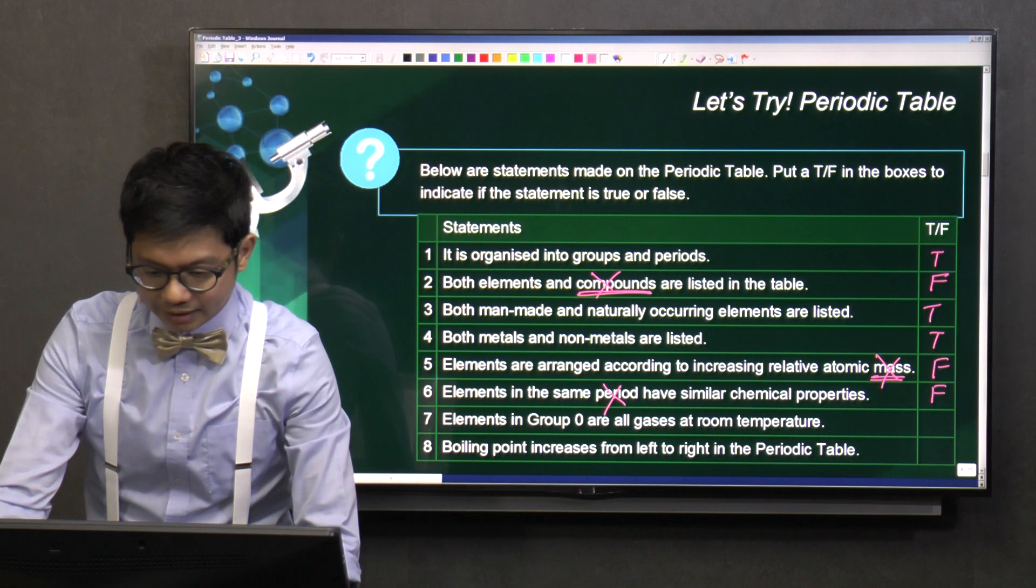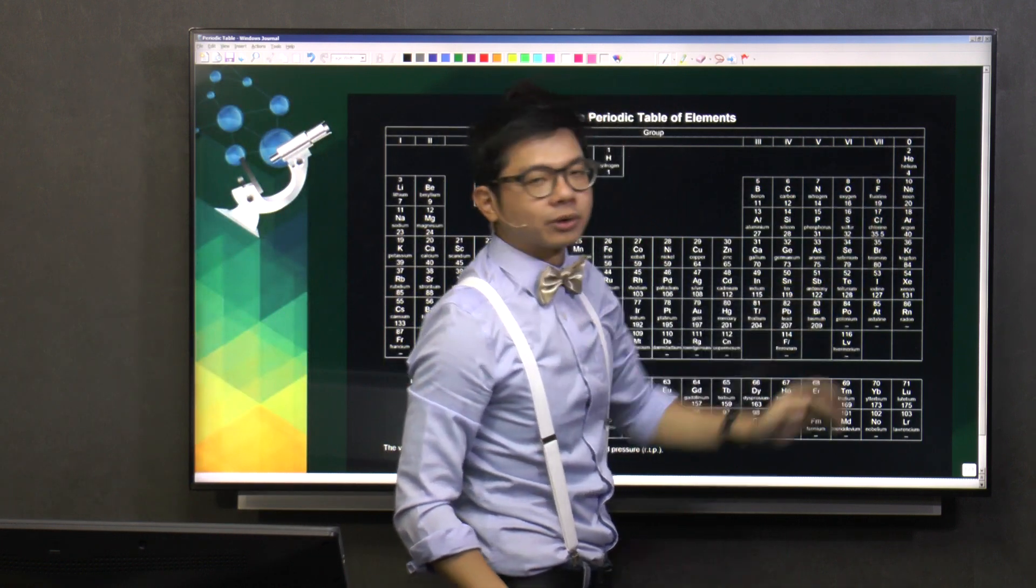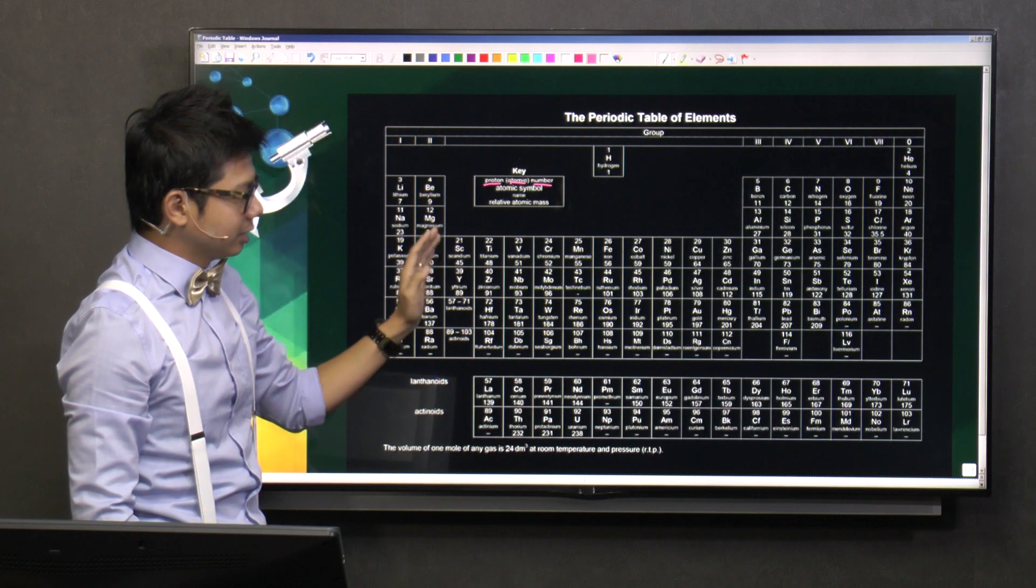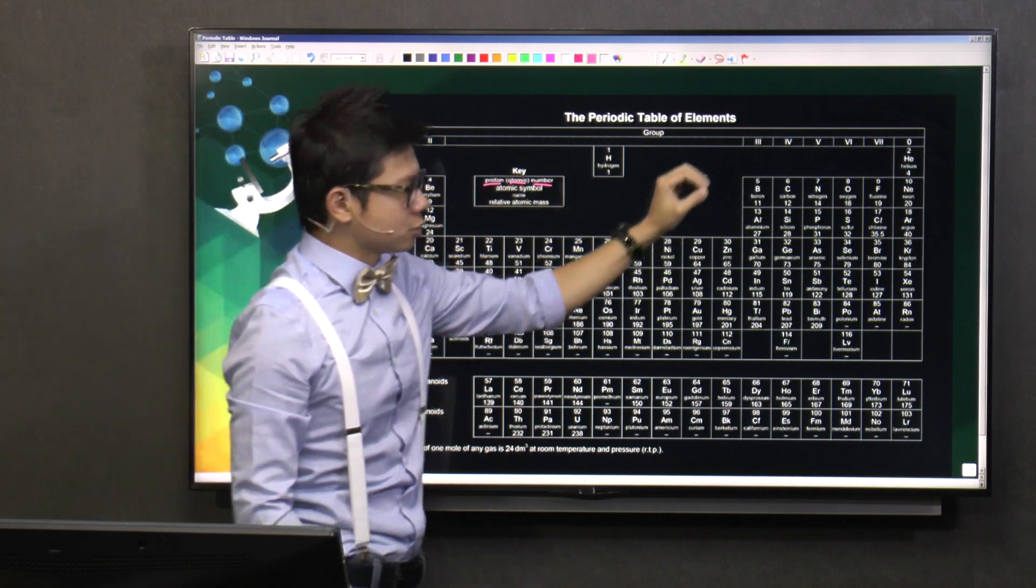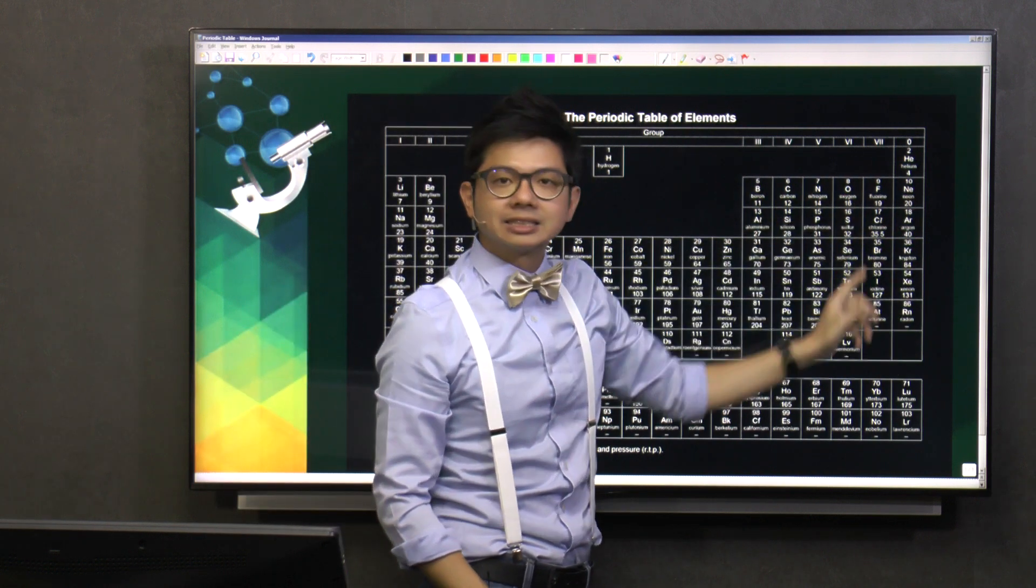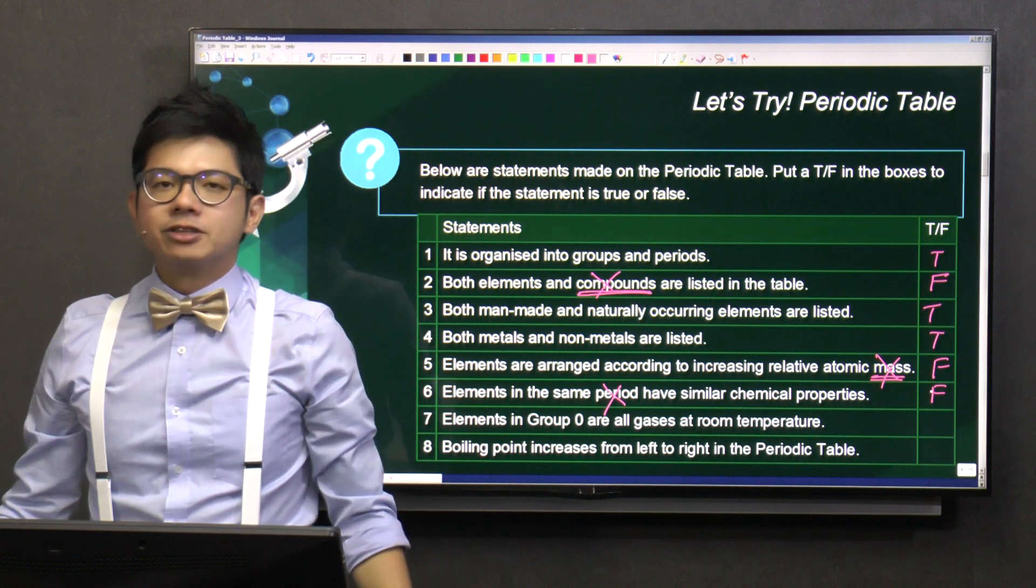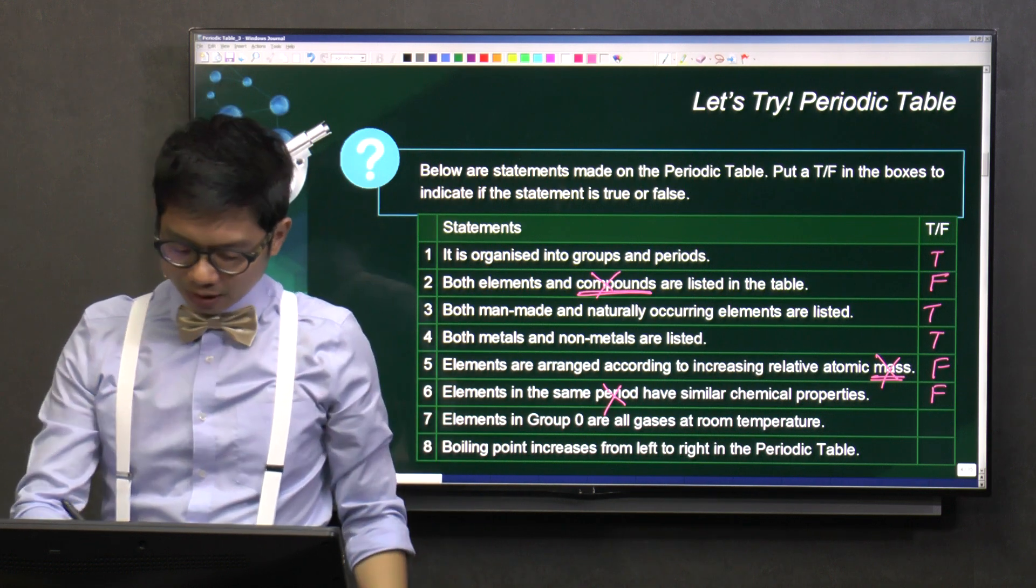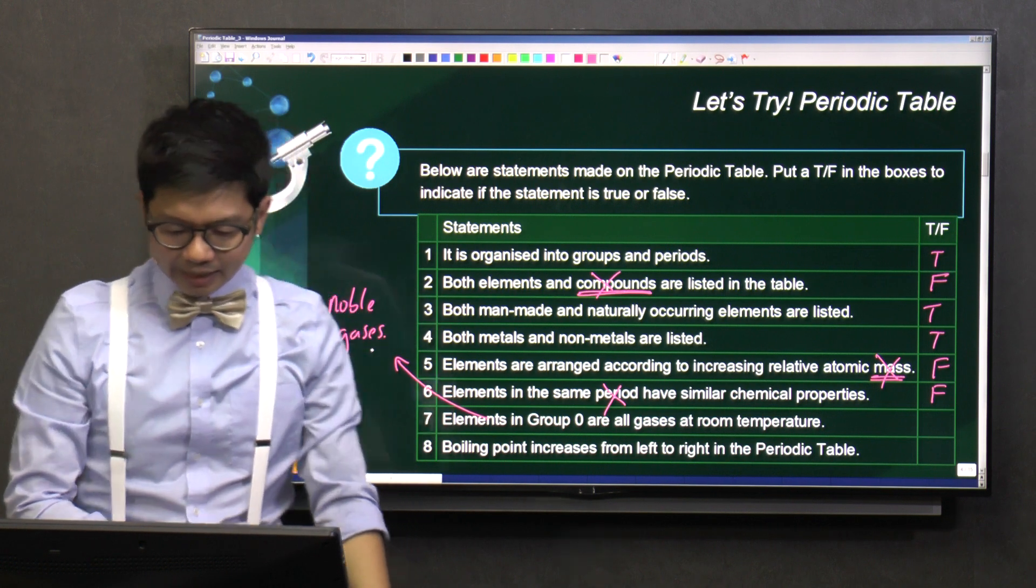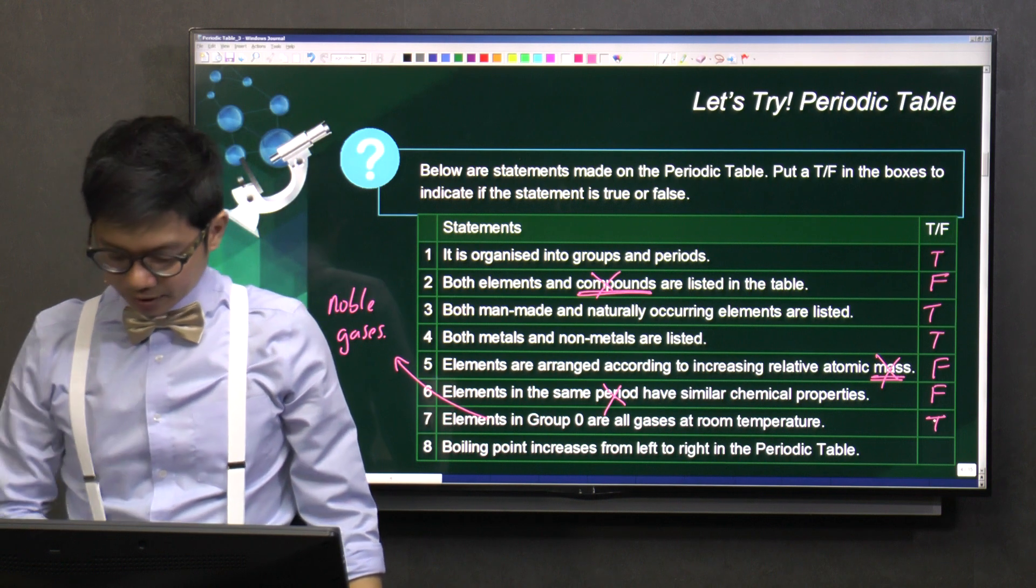Elements in group zero are all gases at room temperature. So, we look at the periodic table. Can you see that group zero is actually right on the right side? All the way to the right. And we know that across the period, the state of the element, it changes from solid to liquid to gases. So, to the right side, right at the end, all these should be gases. Is that clear? So, group zero, there is a name, another name given to this group of elements. They are called the noble gases. And noble gases, of course, it tells you that they are all gases at room temperature. So, this is true.